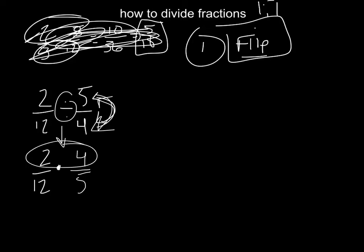Then multiply across the top, the eight. Multiply across the bottom, the 60. And then you can reduce it. We know that four goes into both of those. So it goes into that one twice, and then it goes into that one 15 times. Okay, and then you're done.